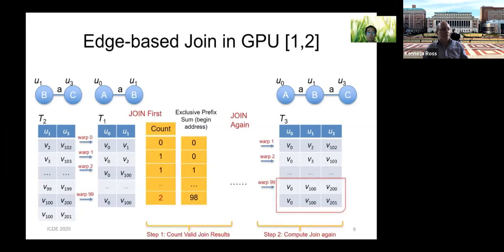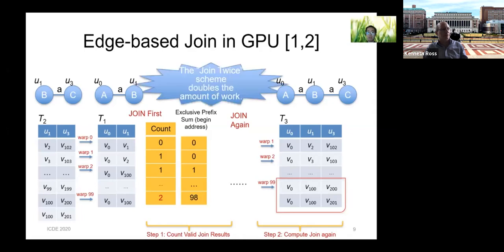To perform edge joining on GPU, existing algorithms use one warp for each row. The difficulty is how to write new results in parallel. To avoid conflicts, they perform the join twice: the first join only counts valid results for each row, then a new table T3 is allocated and the join is performed again to write results in parallel. This 'join twice' strategy doubles the amount of work.